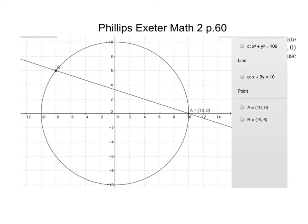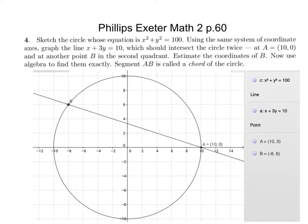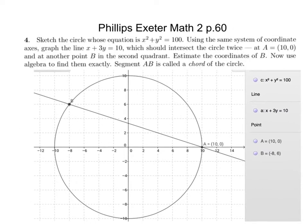Here's our picture from GeoGebra of the circle and the line. The line should intersect the circle in two spots, and it does — at (10, 0), which I already graphed, and then we can find the other point. GeoGebra gives us that it is at negative 8, 6. So point B is at negative 8, 6.